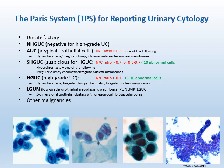If NC ratio is greater than 0.7 and meets the criteria for certain nuclear features with enough abnormal cells, it is classified as HGUC, as illustrated in the third picture. If NC ratio is greater than 0.5 with certain nuclear features, it is classified as AUC, as shown in the first picture. If it doesn't meet the criteria for HGUC but is worse than AUC, it is classified as SHGUC. We'll talk about the diagnostic criteria in each category in detail.